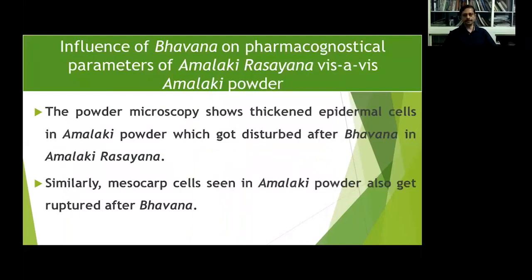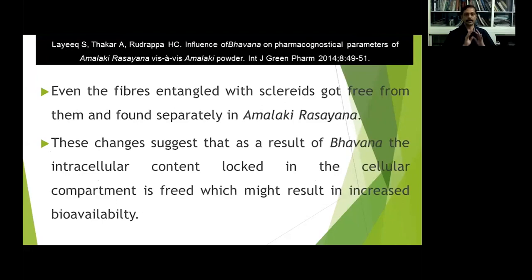Another study speaks about the influence of Bhavana on pharmacognostical parameters of Amalaki Rasayana versus Amalaki Churna. Powder microscopy shows thickened epidermal cells in Amalaki powder which got disturbed after Bhavana in Amalaki Rasayana. Similarly, mesocarp cells seen in Amalaki powder also got ruptured after Bhavana. Even fibers entangled with scleroids got free from them and formed separately. These changes suggest that as a result of Bhavana, the intracellular contents locked inside cellular compartments are freed, which might result in increased bioavailability and better therapeutic efficacy.